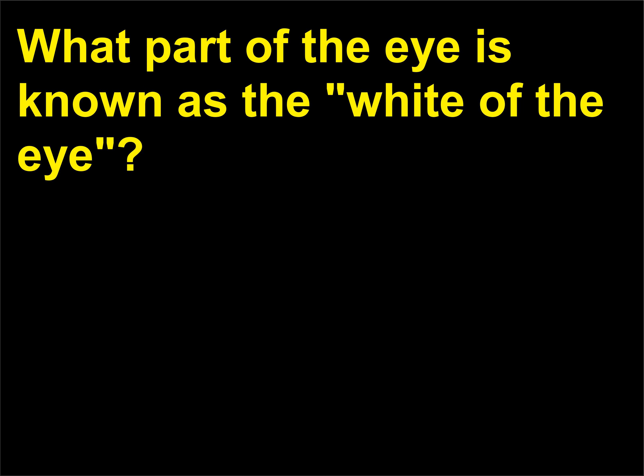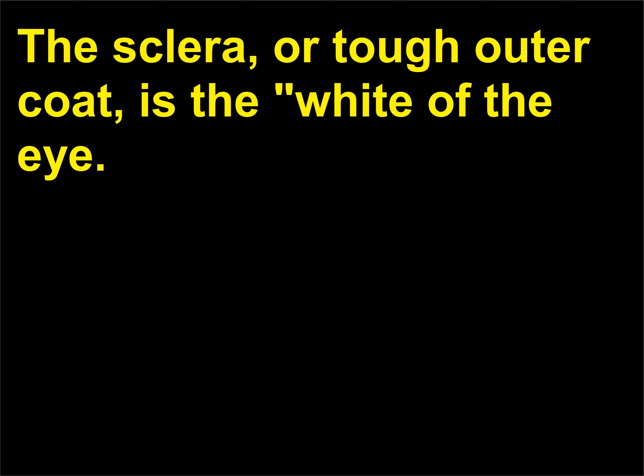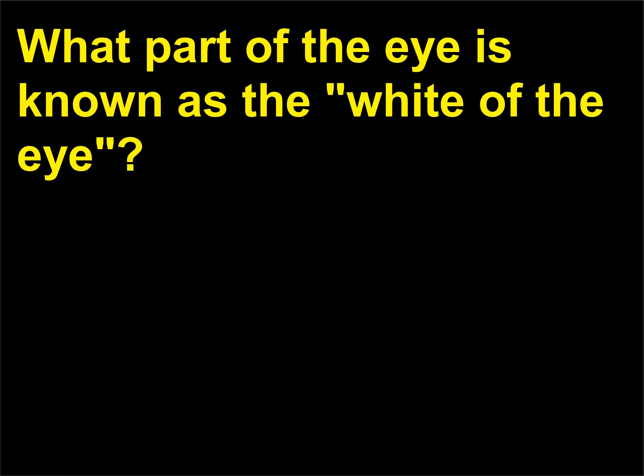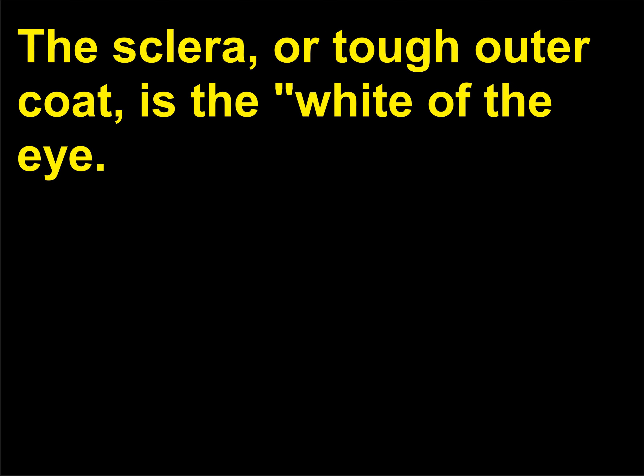What part of the eye is known as the white of the eye? The sclera, or tough outer coat, is the white of the eye.